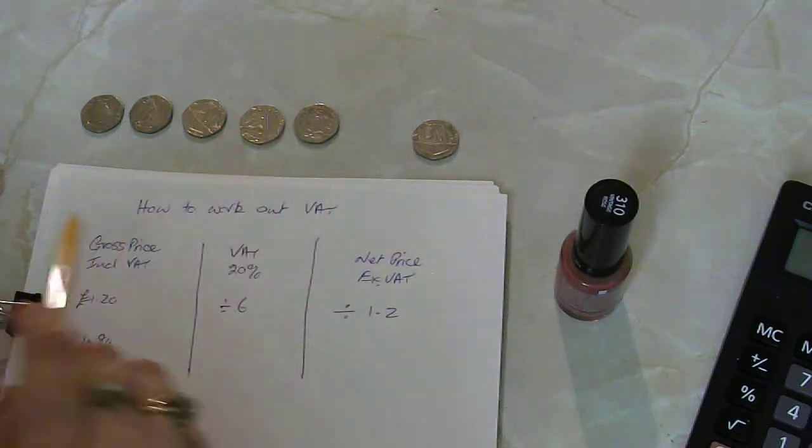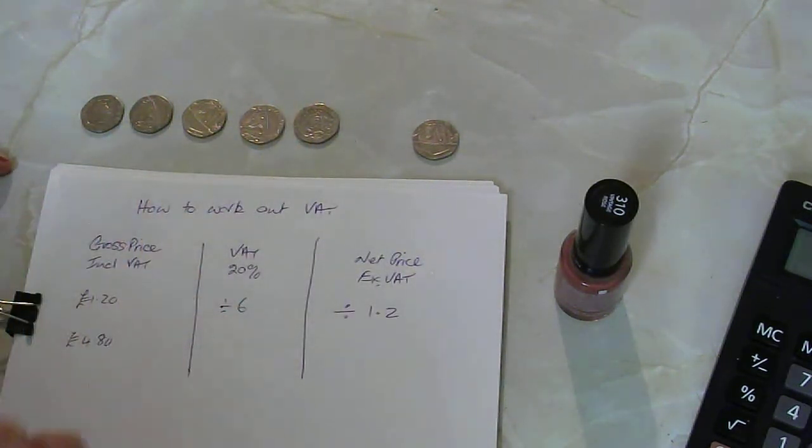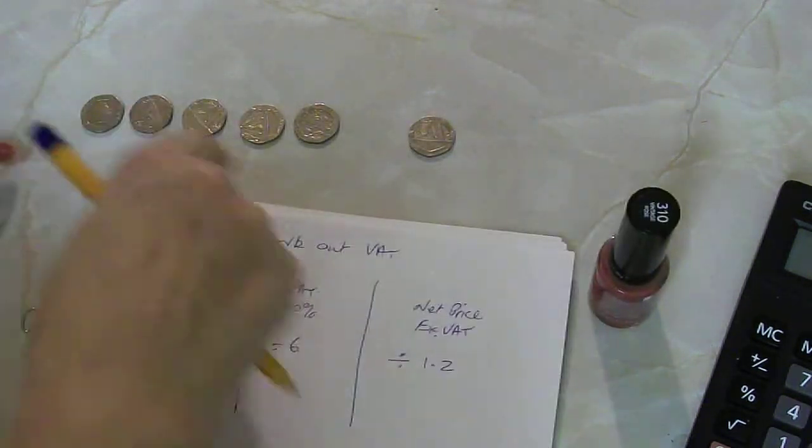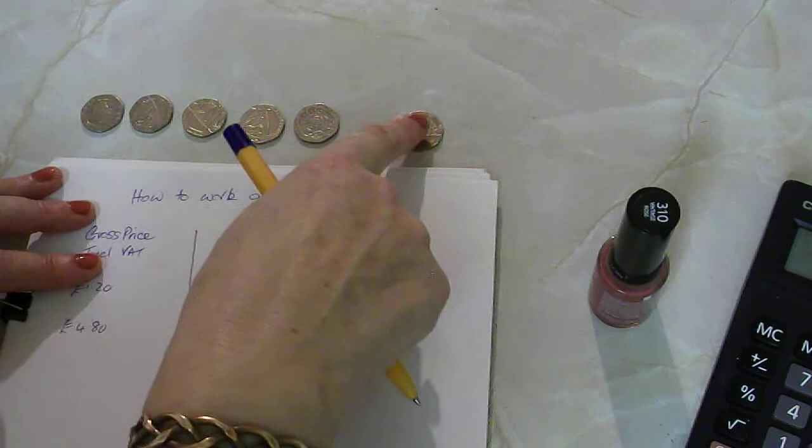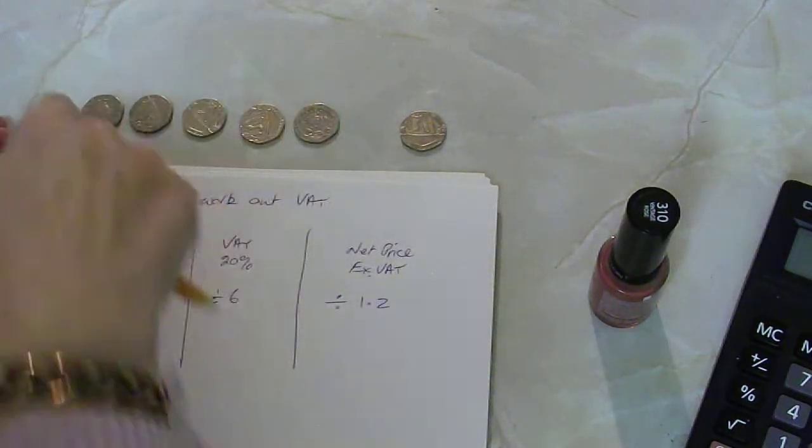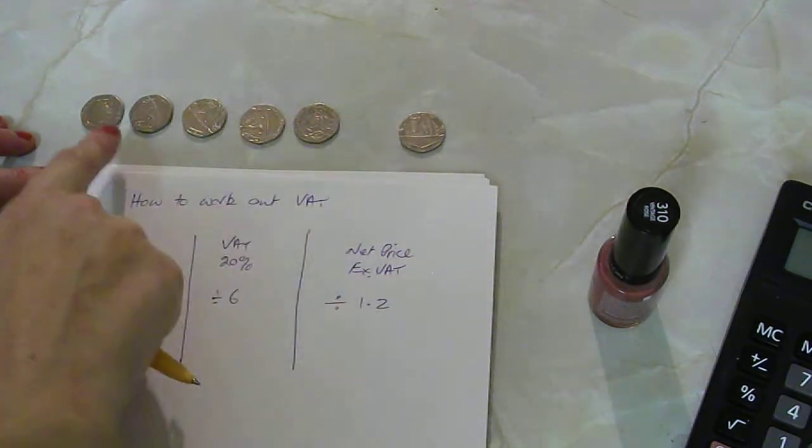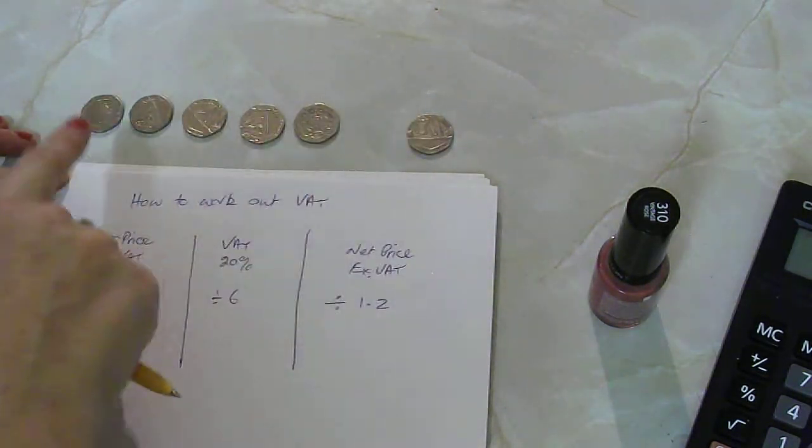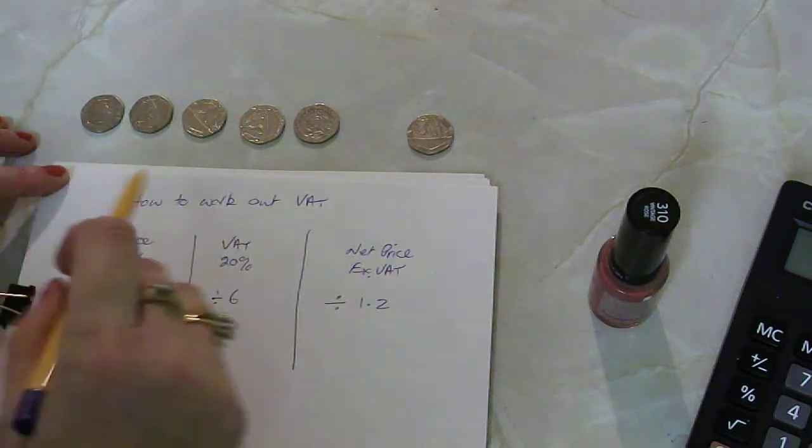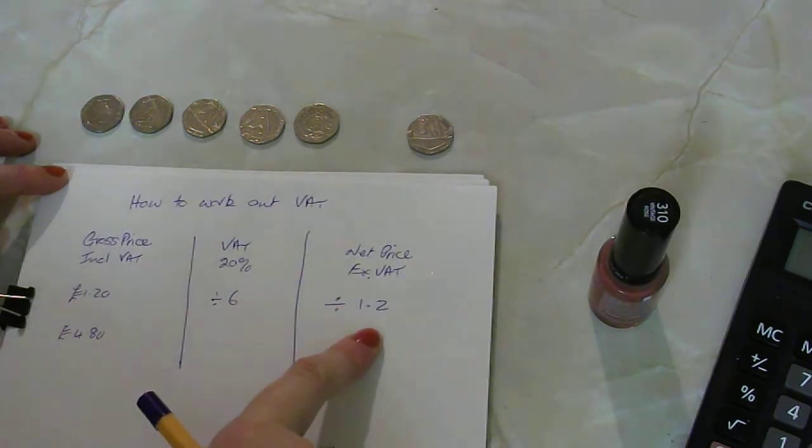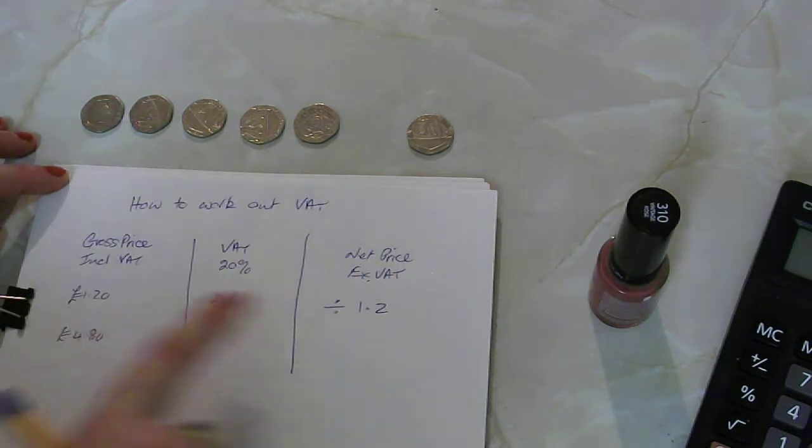Likewise, if we want to find this price, what we need to do then is divide by, remember this is a whole and then this is part of a whole. So this is one and then this would be 0.2 because it's 20%. So we need to divide by 1.2 to get the net price which is the price of the goods themselves. So £1.20 divided by 1.2 should give you £1.